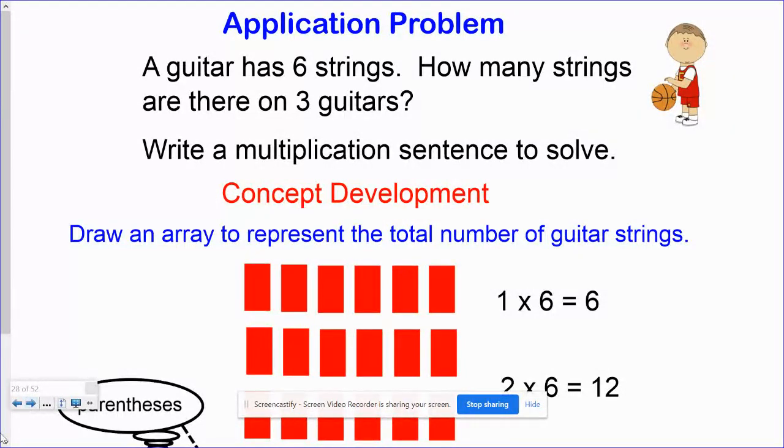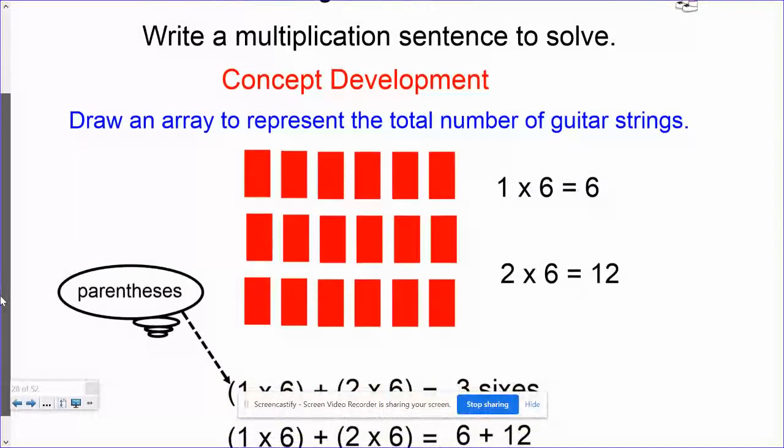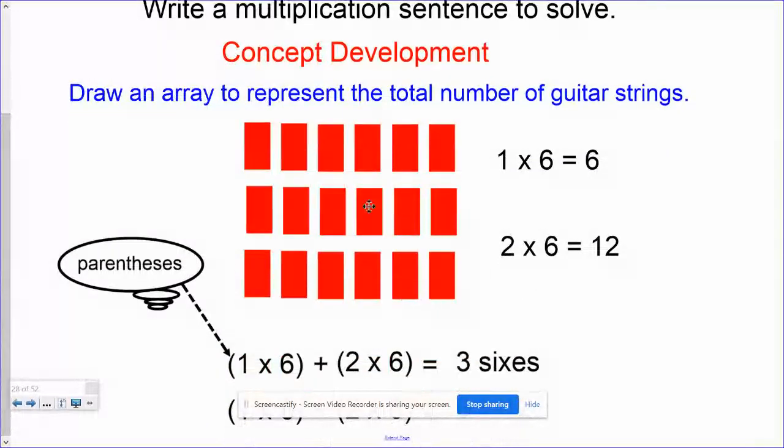If you take a look at the first row here, you'll see that we have one row of six. A guitar has six strings. One, two, three, four, five, six. There's our one times six. But since there are three guitars, I'm going to add two more.